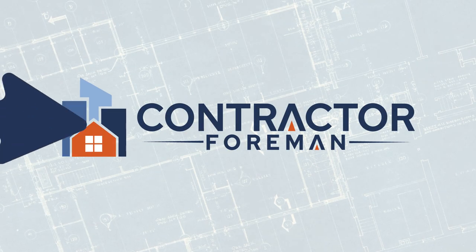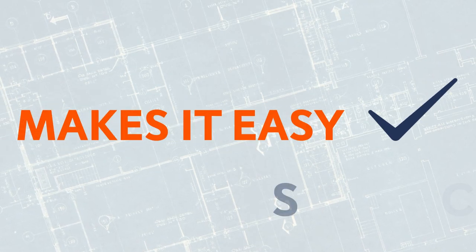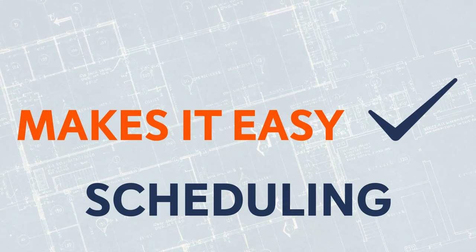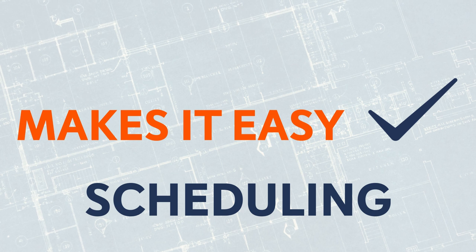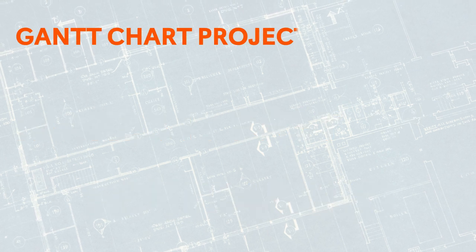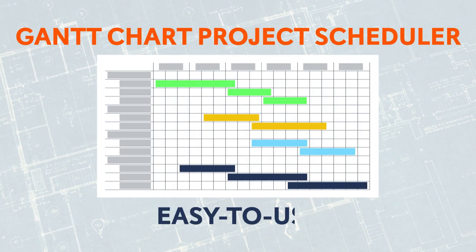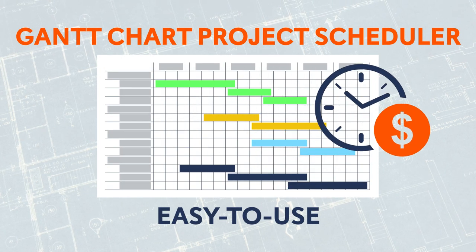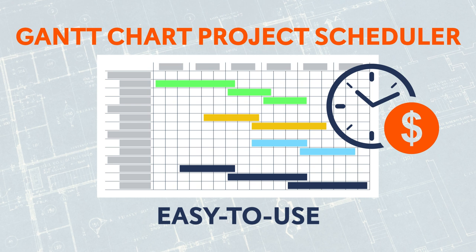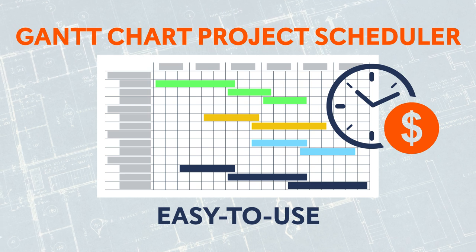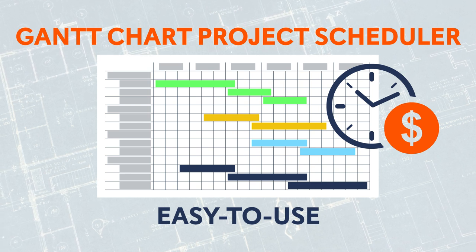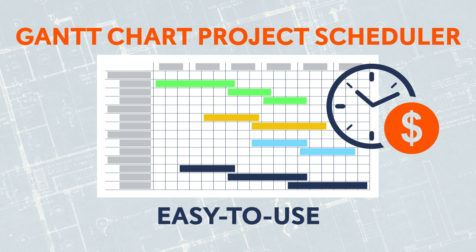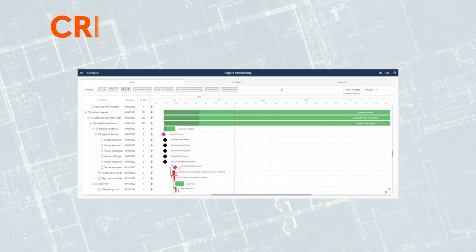Contractor Foreman makes it easy for you to do superior scheduling. Finally, an easy-to-use Gantt chart project schedule. We all know time is money. With Contractor Foreman, spending hundreds of dollars per year for Critical Path Method Gantt Charts is a thing of the past.